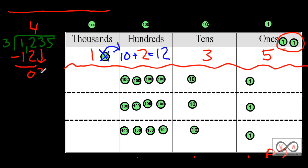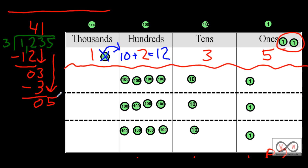We subtract and get a difference of 0, then bring down the tens — and there are three tens, just as we had on the place value chart. We think 3 goes into 3: we did that on the place value chart, 3 divided by 3 is 1. Put that up in our quotient. 1 times 3 equals 3, subtract, a difference of 0 again. We bring down the ones — there were 5. So 3 goes into 5 one time. 1 times 3 is 3, subtract, and we get a difference of 2.